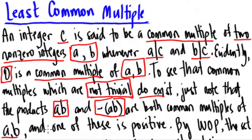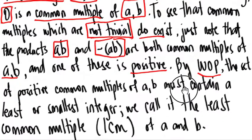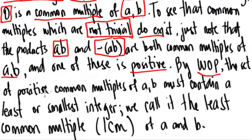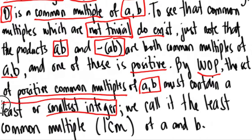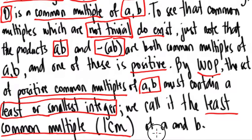They're not always the least. And one of these is positive, so by the well-ordering principle, the set of positive common multiples of a and b must contain a least or smallest integer. That's by the well-ordering principle.